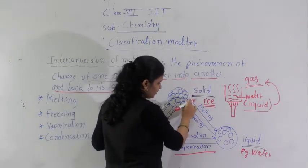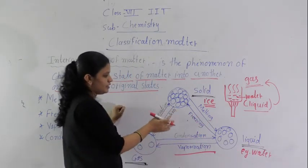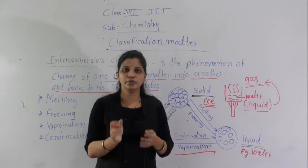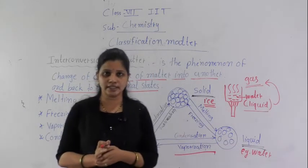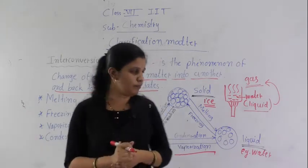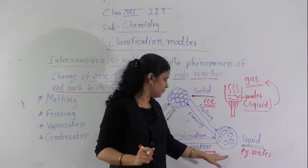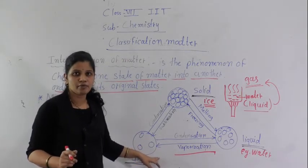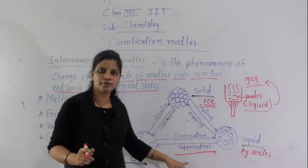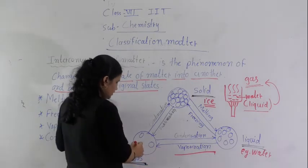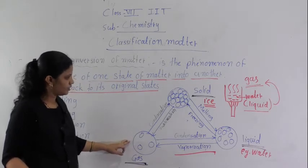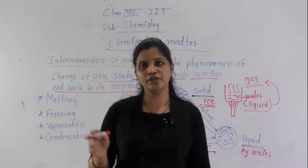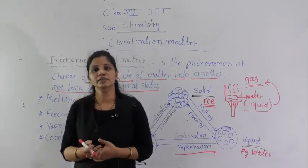Now let's review. In the solid state, the melting process converts it to liquid. For example, ice at 0 degrees Celsius — when you keep ice outside the freezer, it starts melting and converts into liquid. If you then give heat to that liquid, it converts into water vapor, which is the gaseous state. That process is known as vaporization, or you can also say evaporation. Then this gas converts back into liquid state — that is known as condensation. So melting, condensation, vaporization, and evaporation are all processes we have learned before.